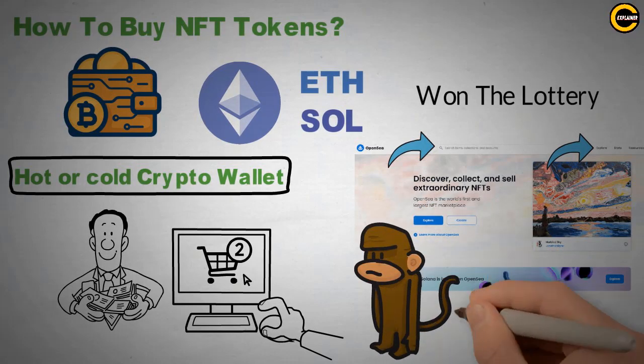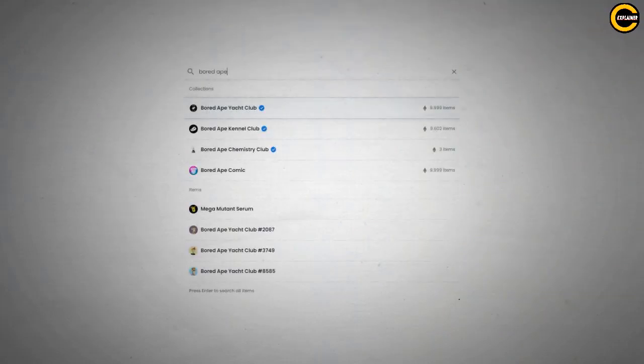OpenSea verifies official collections with a blue tick to prevent fraud, which still sometimes happens. You can choose one of the Bored Apes you like.